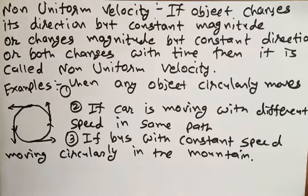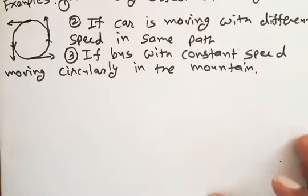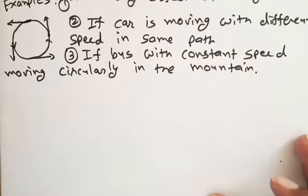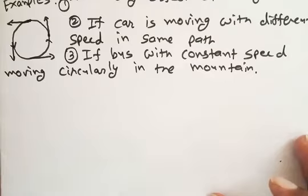For uniform velocity, the example is: if a car is moving with the same speed in the same direction, covering the same distance in the same time interval, then it is considered an example of uniform velocity.